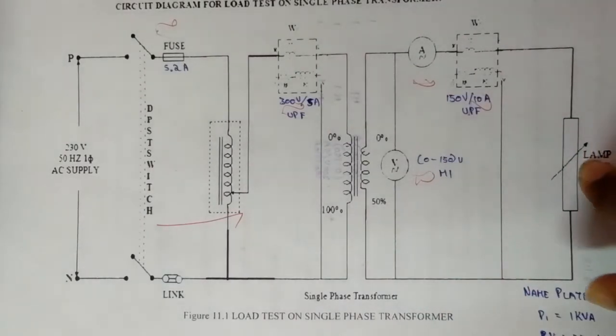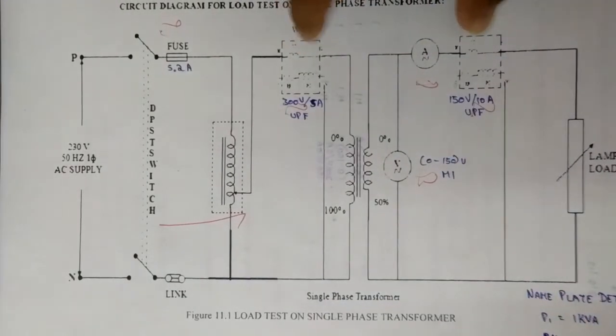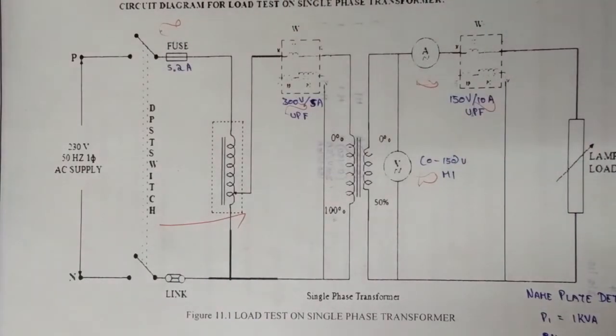By varying the load lamps, the corresponding ammeter, voltmeter, and wattmeter readings are noted down. The same procedure is repeated up to the rated current. All the readings are tabulated in the tabular column and required quantities are calculated to draw the characteristics curve.